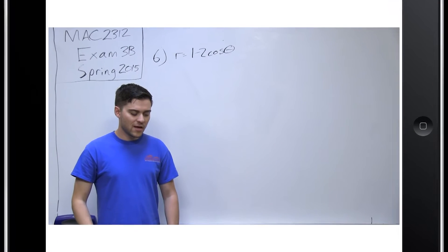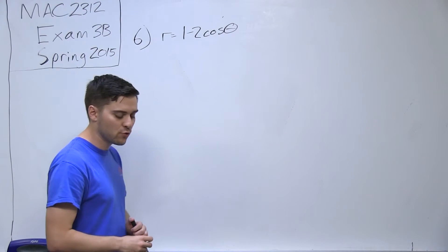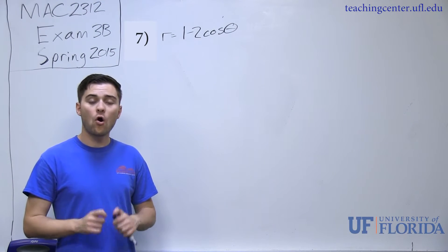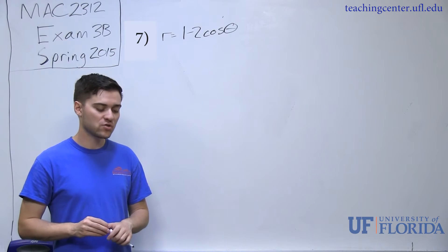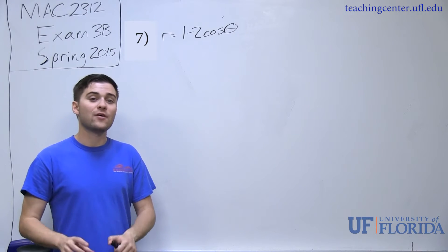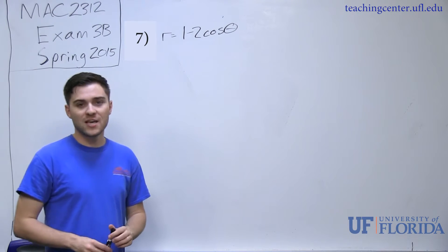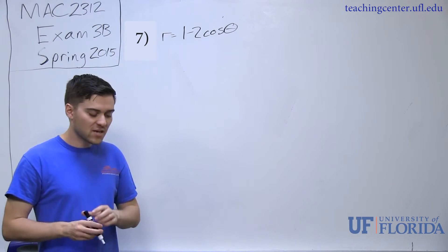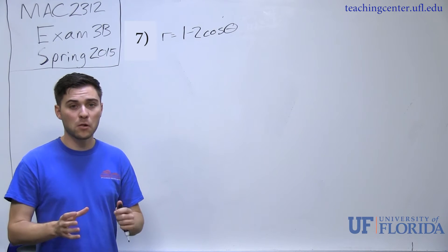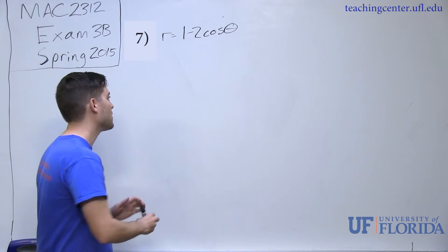Problem number seven is asking us to find the area inside the larger loop and outside the smaller loop of the curve r equals 1 minus 2 cosine theta. It only wants that area in the first and second quadrants. That's a lot of information, but what we need to do first is plot the polar graph to see how the shape is actually forming.